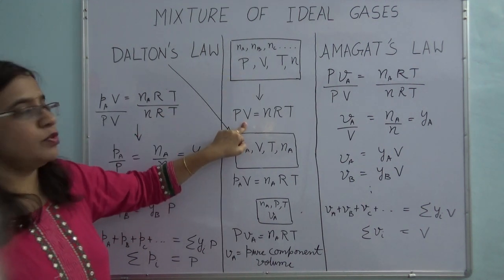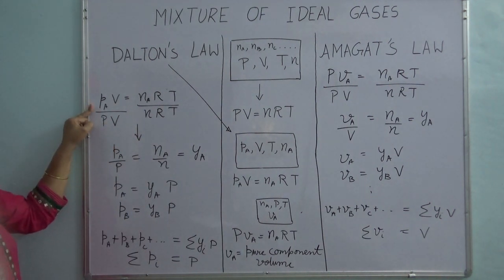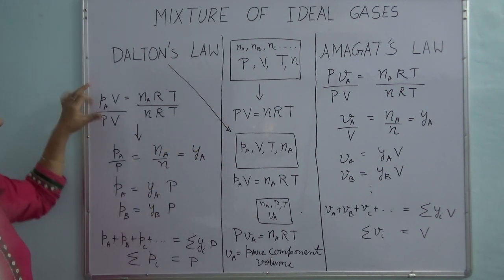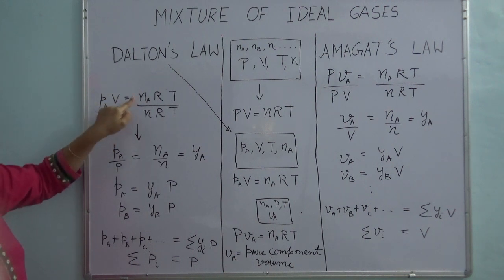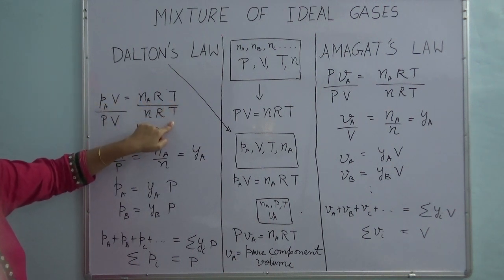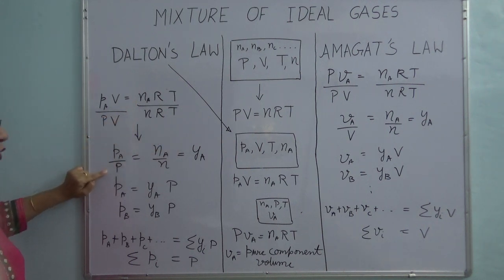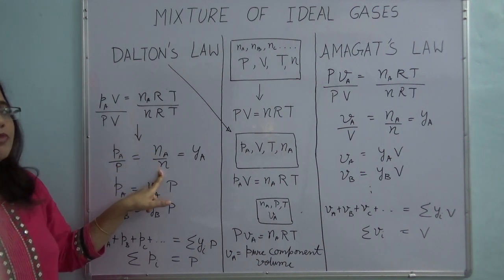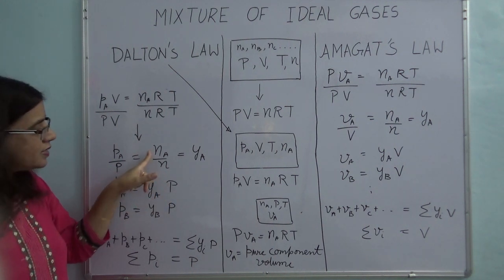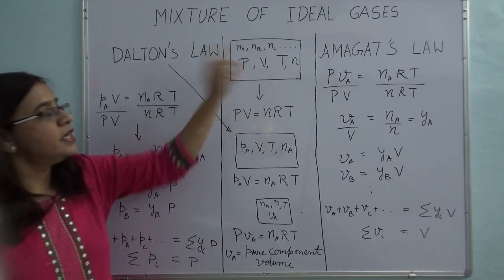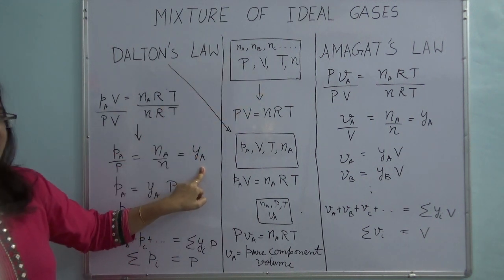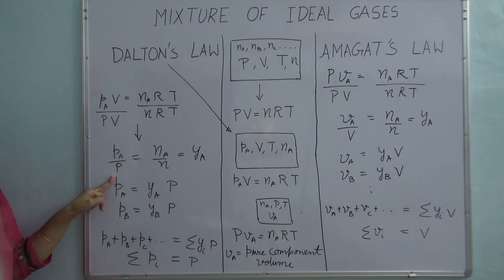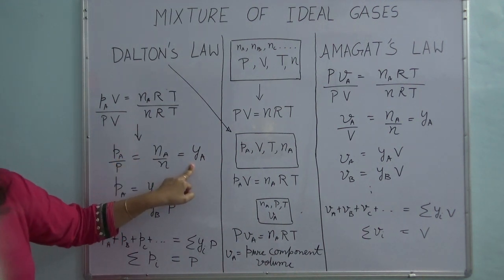Let's divide the component A equation by the mixture equation. V cancels, R and T are the same and cancel. So I am left with: partial pressure of A divided by total pressure of the mixture equals number of moles of A divided by total number of moles. But Na/N is the mole fraction of component A in the mixture. So PA/P = Ya.